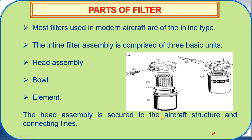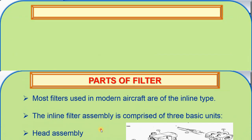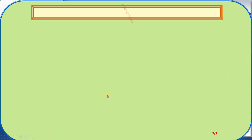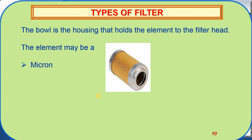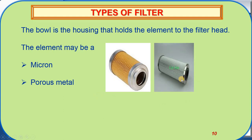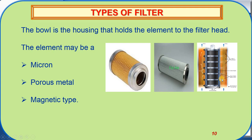The head assembly is secured to the aircraft structure and connecting lines. The bowl is the housing that holds the element to the filter head. The element may be a micron type — this is the picture of a micron filter — a porous metal type — this is the picture of a porous metal element — or a magnetic type — and this is the picture of a magnetic type filter element.